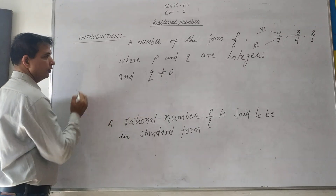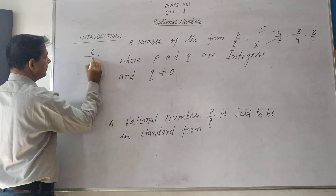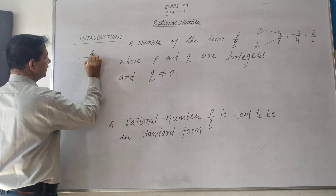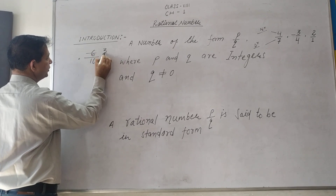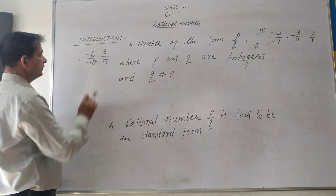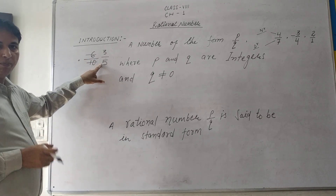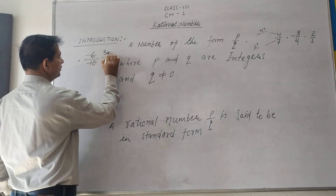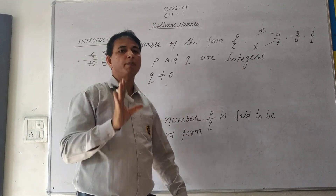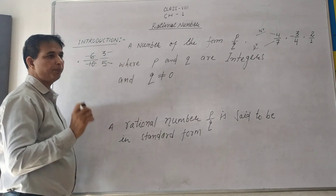For example, suppose you have 6 upon 10. But 6 upon 10, cancel by 2, gives 3 upon 5. So 3 upon 5 is the standard form. A rational number should always be in standard form — the common factor of the numerator and denominator should not be more than 1. Here, 3 and 5 are both prime numbers.